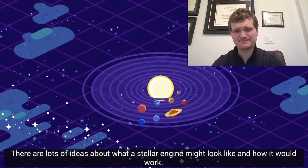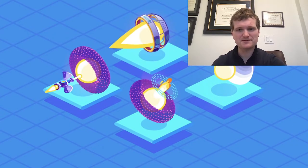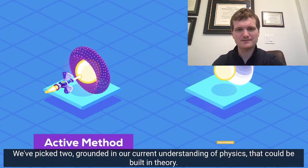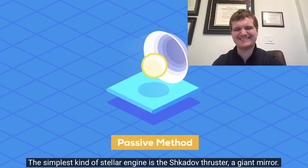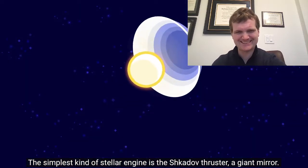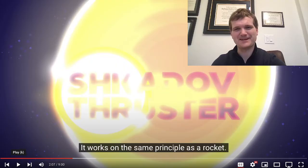That makes sense. There are lots of ideas about what a stellar engine might look like and how it would work. We've picked two grounded in our current understanding of physics that could be built in theory. The simplest kind of stellar engine is the Shkadov thruster. A giant mirror. That is a cool font.